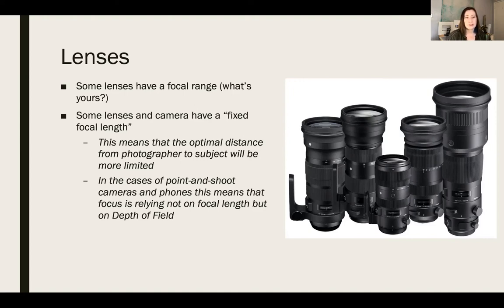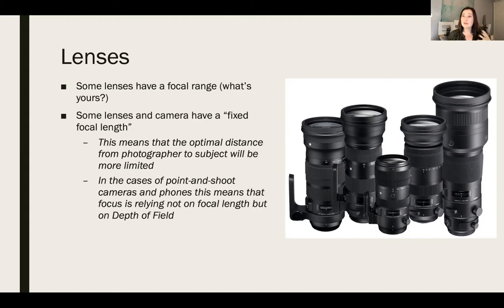In the case of point-and-shoot cameras and phones, focus relies not on focal length but on depth of field. If you have a phone camera, you can click different parts of your screen and it will focus there. That is actually done not via focal length — nothing physical is happening; everything is technically in focus. When you click an area on your cell phone it blurs everything else and keeps just your subject sharp through software and electronic means, not through the actual physics of light through a lens. We also call this bokeh.